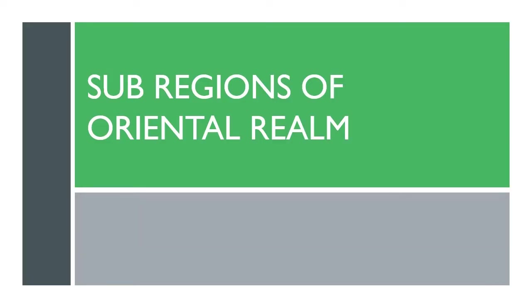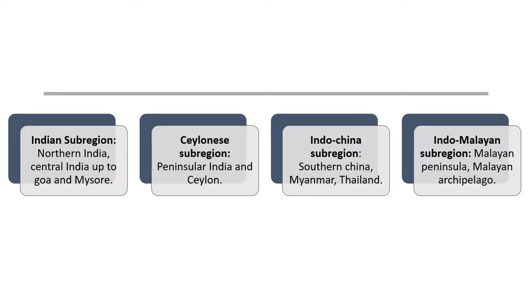There are four sub-regions in the Oriental Realm. The first is the Indian Sub-region, which includes most of northern India and extends up to the Mysore and Goa region. The second sub-region is known as the Ceyloni Sub-region. It includes peninsular India — the states of Kerala, Tamil Nadu, and certain portions of Karnataka and Andhra Pradesh — in addition to the entire Sri Lanka.